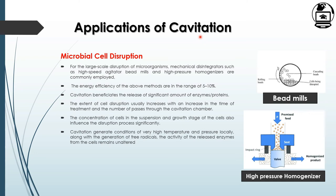Cavitation has many applications. Microbial cell disruption is one important application. For efficient large-scale disruption processes, cavitation is considered a key factor for economical production of industrially important microbial components. Mechanical disintegrators like high speed agitator bead mills and high pressure homogenizers are commonly employed for this purpose.